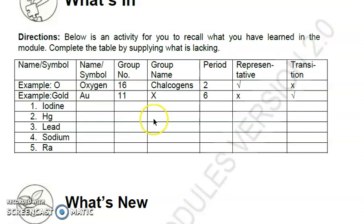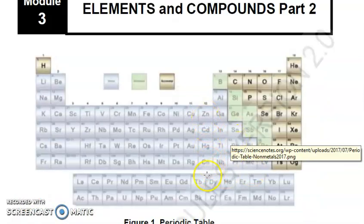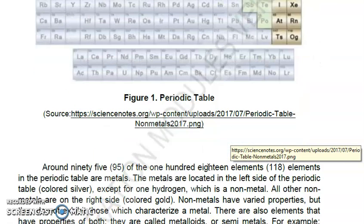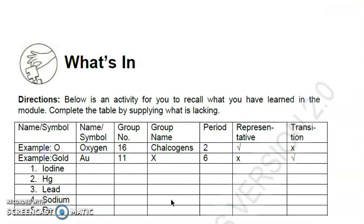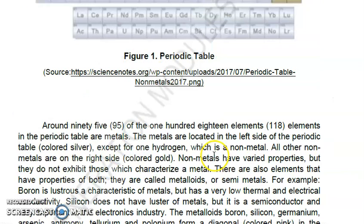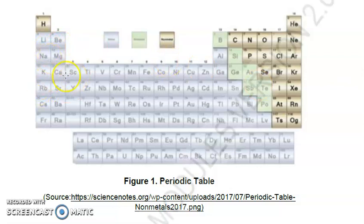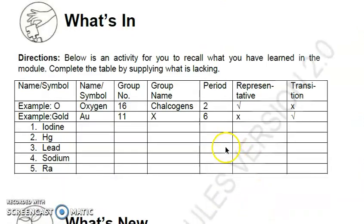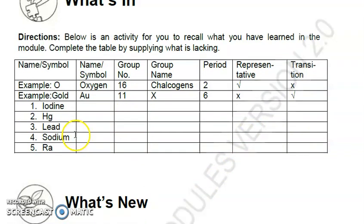For mercury, the name is mercury, the symbol is Hg, the group number is 12. The group name - what is the group name for mercury? Zinc family or zinc. We have period six. Let's try to check - one, two, three, four, five, six - it's period six. Mercury is period six. Is it a representative or a transition element? It is not a representative element, so put X here, instead put check here on transition. The rest you're going to answer them. Anyway, the answer keys are already found at the end part of your booklet.